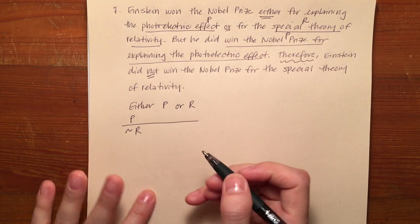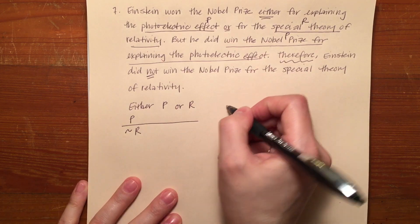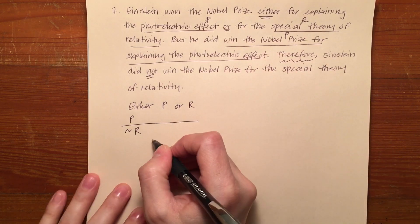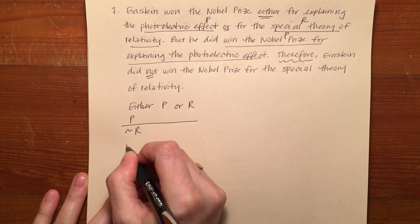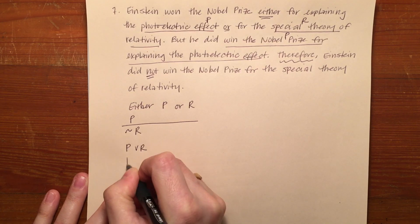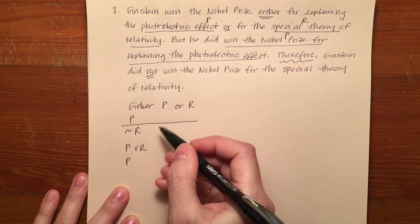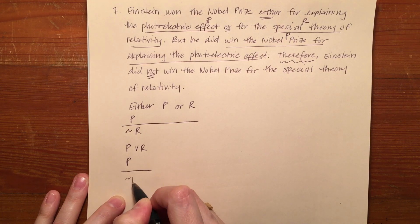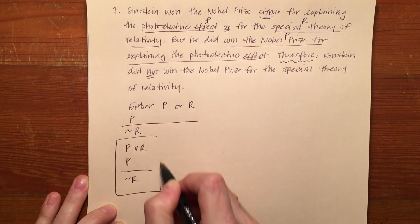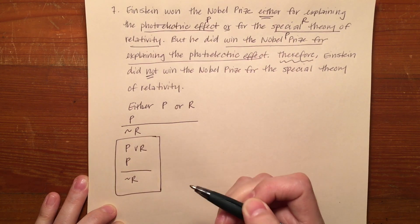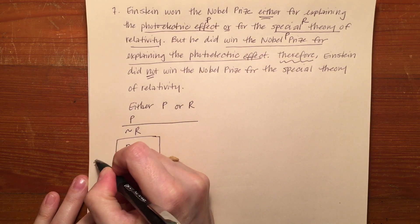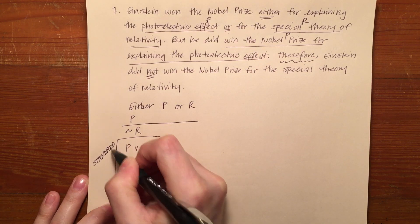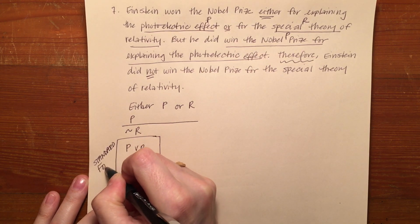My either-or ends up being a wedge. So my standard form is: P or R, P, therefore not R. Standard form.